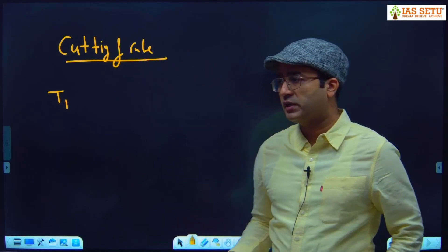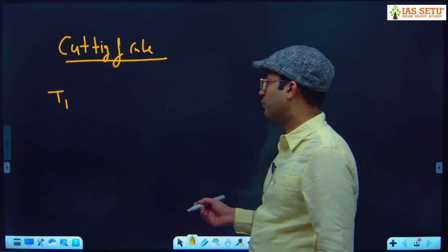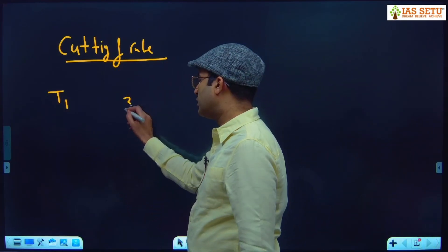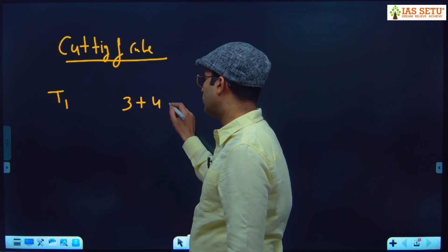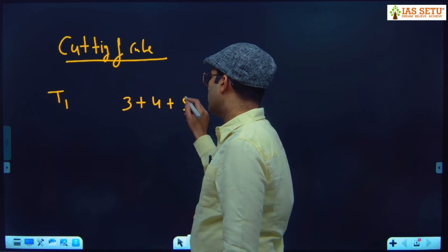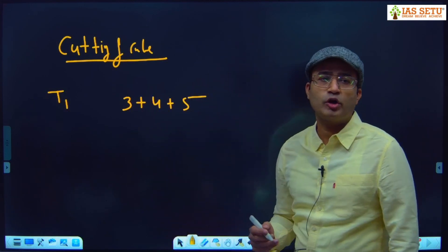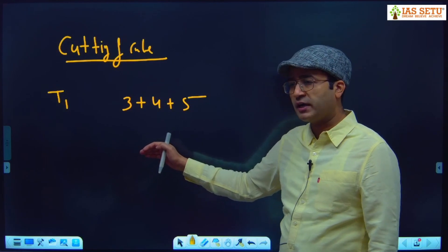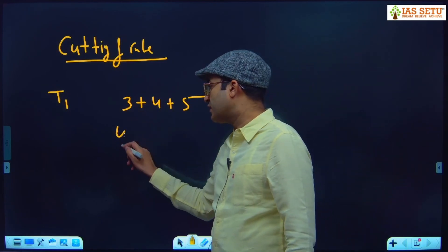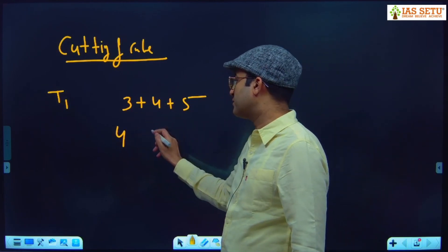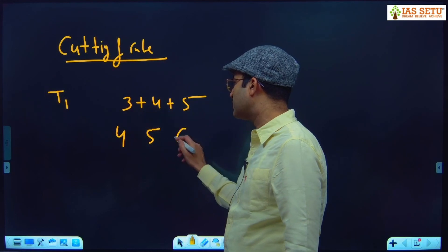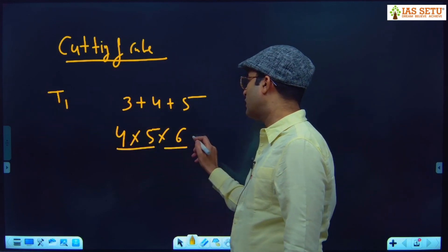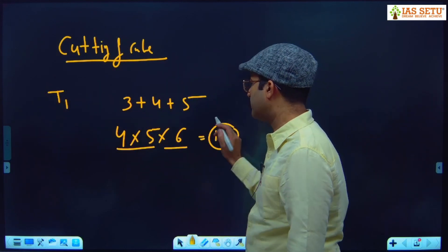Cutting of cube, Type 1: if we make 3 cuts on x, 4 cuts on y, 5 cuts on z, to find the number of pieces, we add 1 to each cut value and multiply. So 3 cuts give 4 pieces, 4 cuts give 5 pieces, 5 cuts give 6 pieces. So 4 × 5 × 6 = 120 pieces.